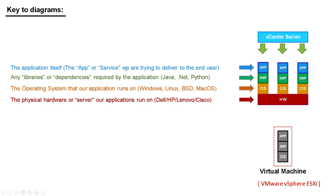The next thing is the application itself — the app or service that we're actually trying to deliver to the end user. For most applications we have to fulfill the dependencies, run the app and the dependencies on top of an operating system, and the operating system needs to run on some kind of hardware. So these are all the different colored blocks in my diagrams.